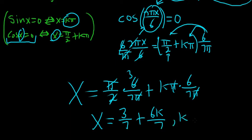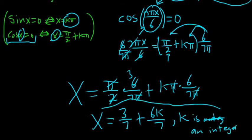And then k is an integer. So these are the discontinuities. These are the x values where the function is not continuous.